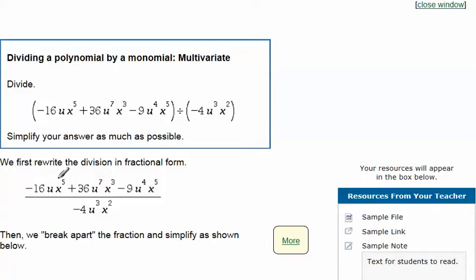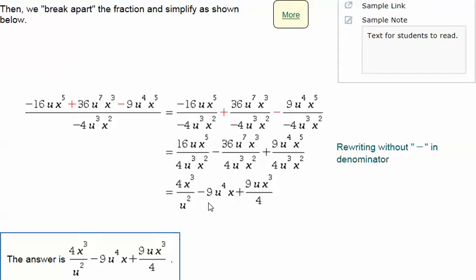You'll have to remember that this is asking us to divide this term by this and this by this and this by this. So it's almost as if we're doing three separate problems. We have negative 16ux to the fifth. That's been recopied over here. The denominator also over here. The plus sign recopied here.